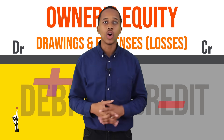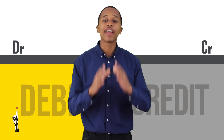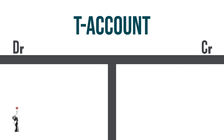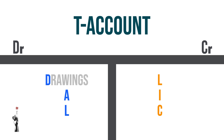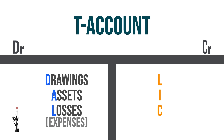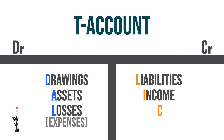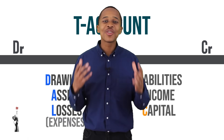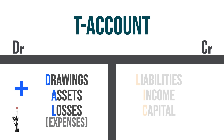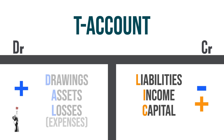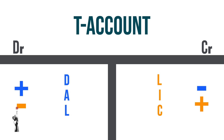I've made this easier with the following acronym to remember those accounting principles: DAL LIC. The D stands for drawings, A for assets, L for losses. On the other side, another L stands for liabilities, I for income, and C for capital. DAL is for the accounts that increase on the debit side and decrease on the credit side. LIC is for the accounts that increase on the credit side and decrease on the debit side.